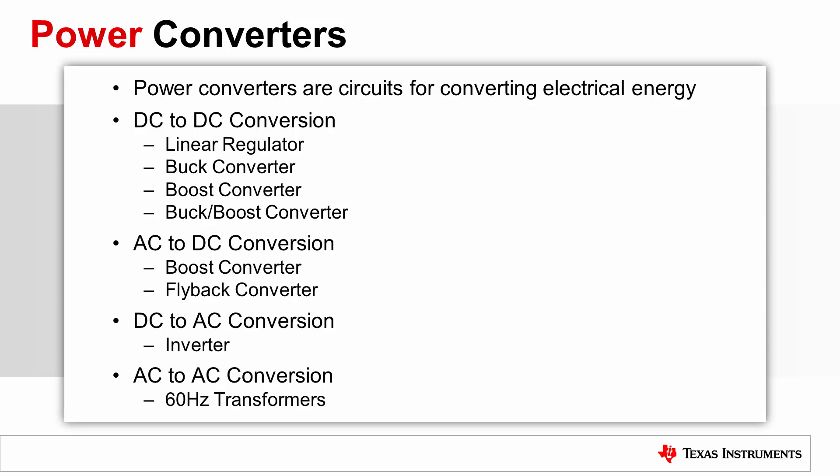DC-to-DC conversion involves moving one DC voltage to either a lower or higher DC voltage. Linear regulators and buck converters both step down the input voltage to a lower DC output voltage. The boost converter, on the other hand, steps up the input voltage to a higher output voltage. A buck-boost converter, as the name suggests, can generate a DC voltage both above and below the input voltage.